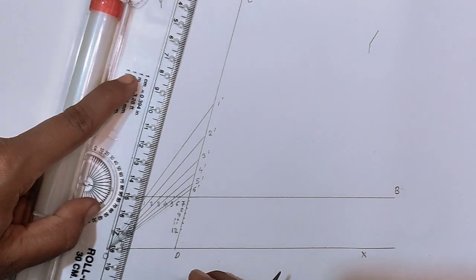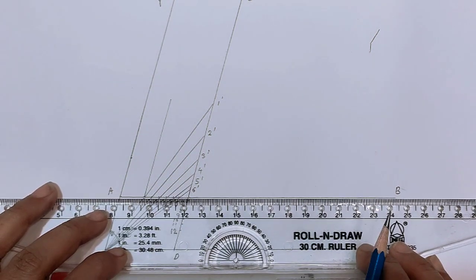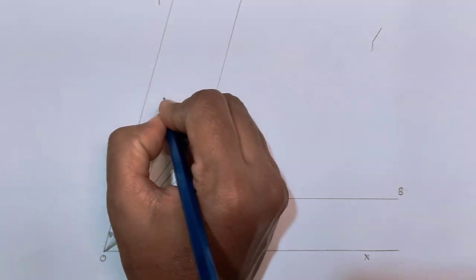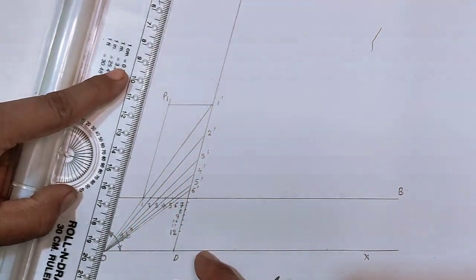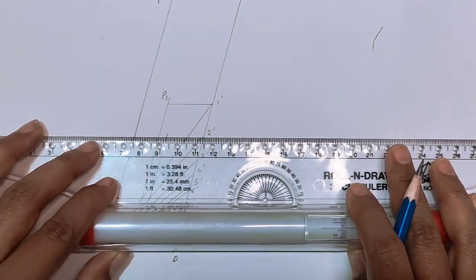Next step, through point 1 draw a line parallel to OY, and through point 1 dash draw a line parallel to OX, and mark P1 as their intersection. And repeat the same procedure for remaining points up to 6.